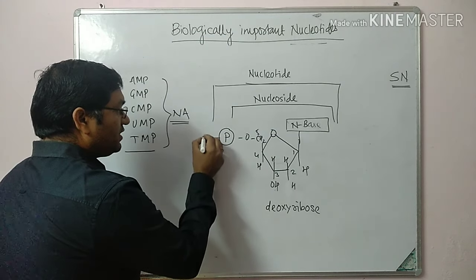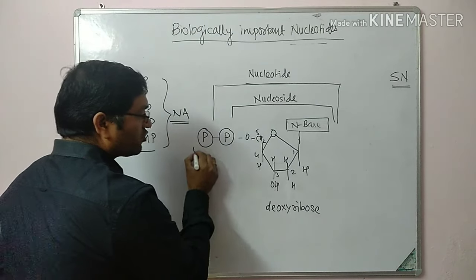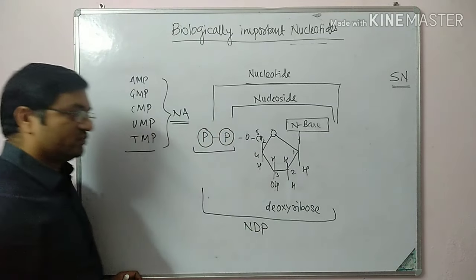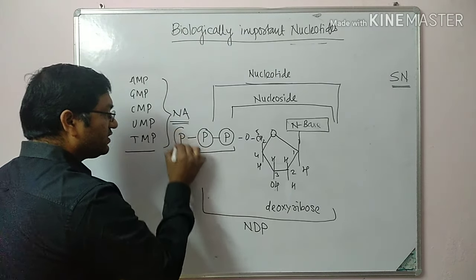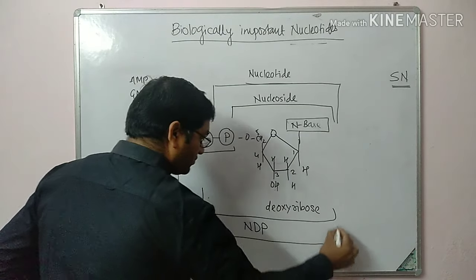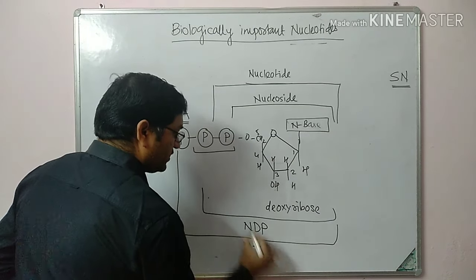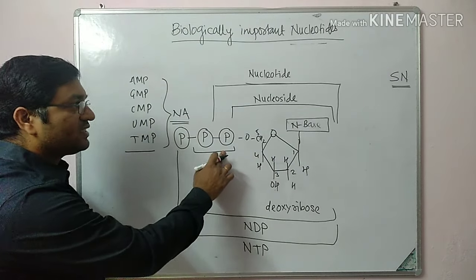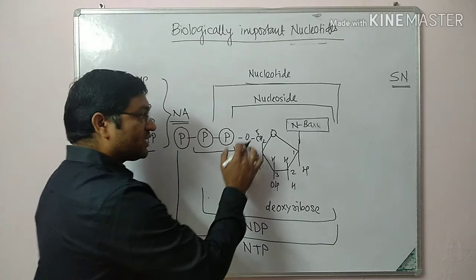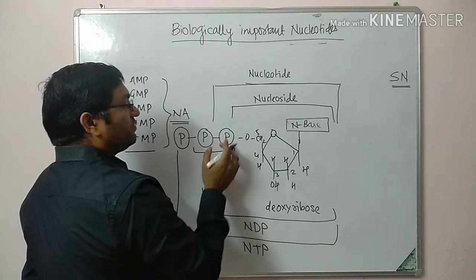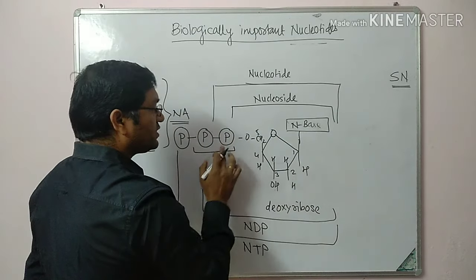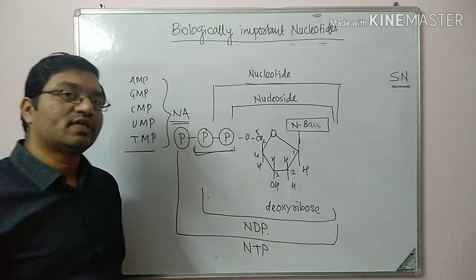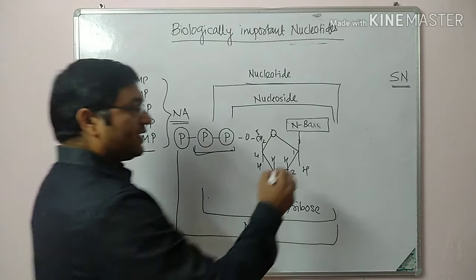When it is again esterified with a second phosphate group, this structure is known as nucleoside diphosphate. And when it is esterified with 3 phosphate groups, it is known as nucleoside triphosphate. So: sugar plus nitrogen base is a nucleoside; when 1 phosphate is attached it is nucleoside monophosphate or nucleotide; 2 phosphates gives diphosphate; 3 phosphates gives nucleoside triphosphate.